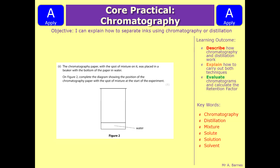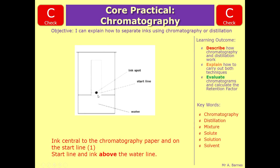Next question: the chromatography paper with the spot of a mixture on it was placed in the beaker with the bottom of the paper in water. On figure 2, complete the diagram showing the position of the chromatography paper with the spot of mixture at the start of the experiment. You've got to remember that the spot should not be in the water. You need to draw the paper just touching the water, with a line drawn in pencil and then an ink spot about central. You would get one mark for the ink central on the start line and one mark for both the start line and the ink being above the water.